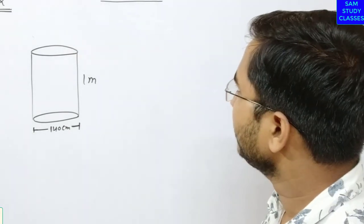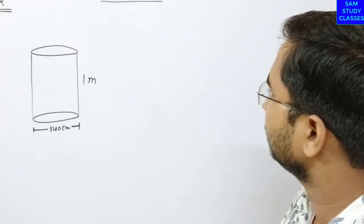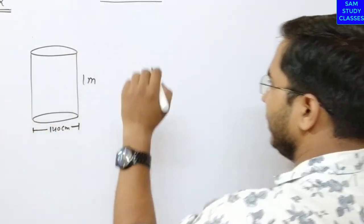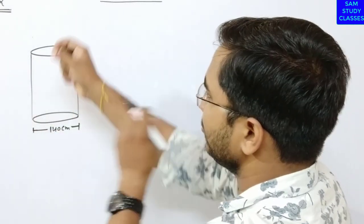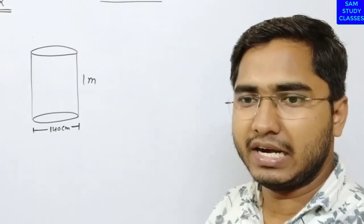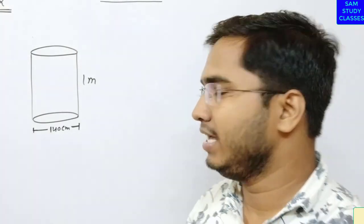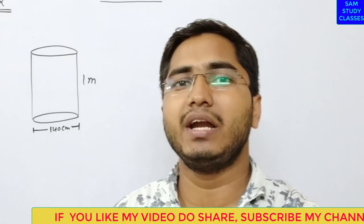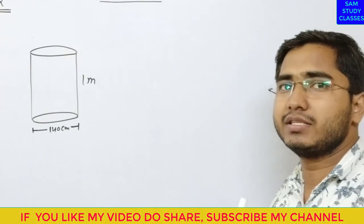So the question is, this cylinder is a closed cylinder. To make this, how many meter square metal sheet is required? How many meter square sheets will be needed?